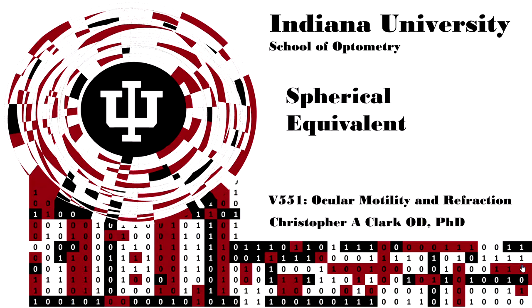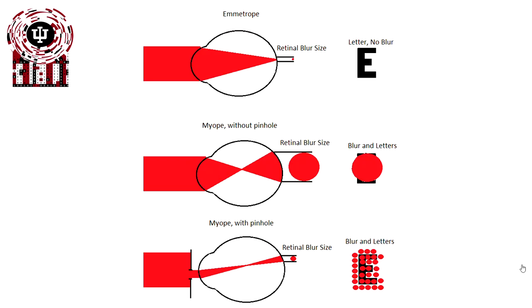This is spherical equivalent for V551, ocular motility and refraction. When we have spherical refractive error, we're altering the retinal blur size. That's the critical part that makes the vision blurry, is the size of the image on the retina.